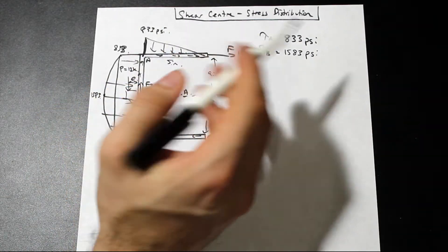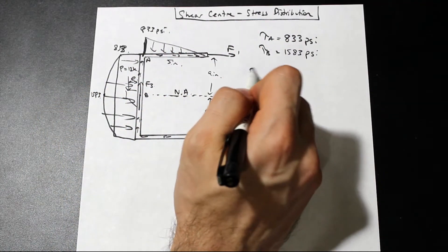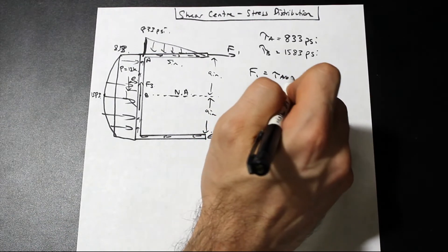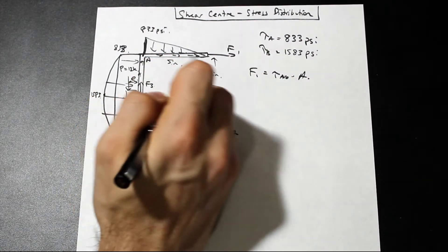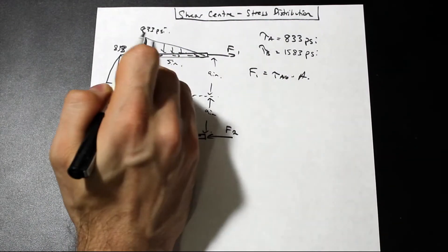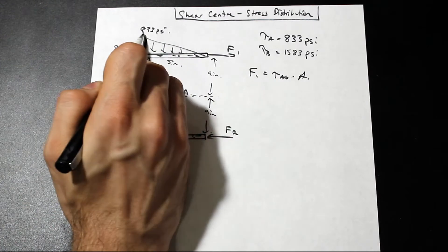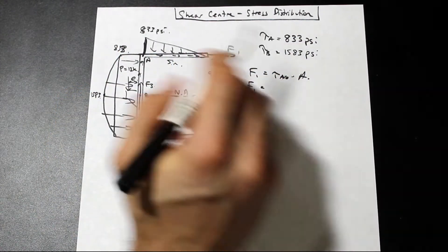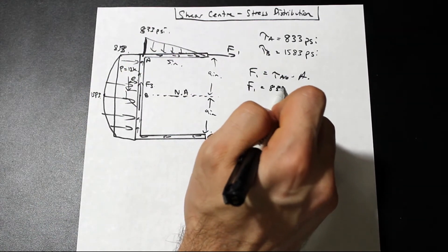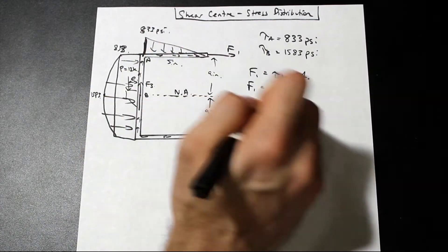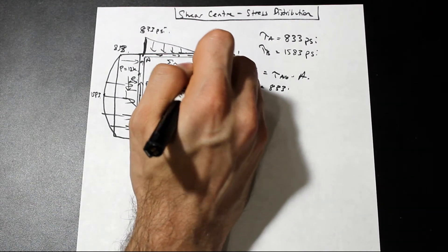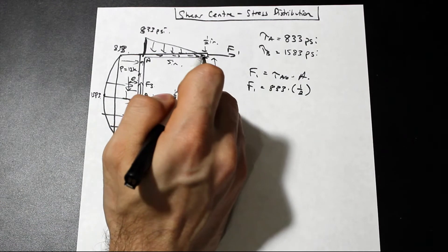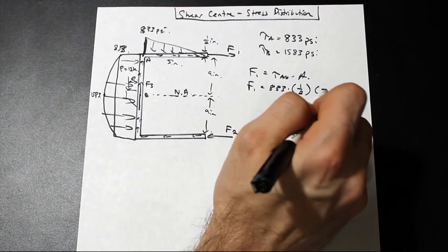So how do we find F1? So we know that F1 is tau average, okay, average times area, okay, and the area of the flange here, we went over that in the other question. Okay, so the average stress here, is simply the maximum shear stress divided by two, because it's a triangular loading. Okay, so we have 833, okay, times the area, which is five, and the thickness is one half inch. Okay, so we have times one half, that's the thickness, T, times the length.